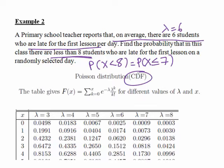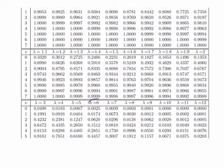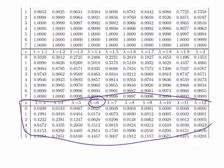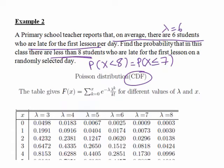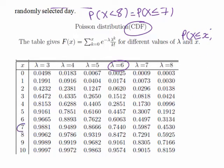That is the table for the cumulative distribution function. The CDF table is set up similarly to the PDF table, with different rows showing different values of lambda — again, lambda equals 6 here. The cumulative distribution function shows the probability of x less than or equal to some particular value. Going to lambda equals 6 and down to x equals 7, looking at their intersection gives a probability of 0.7440 that there will be less than 8 students late for the first lesson on a randomly selected day.